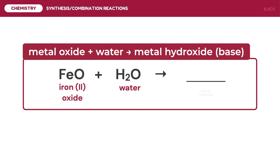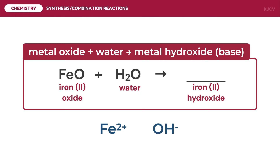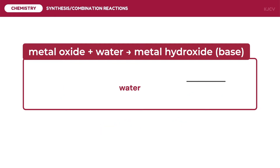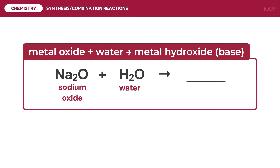For iron 2 oxide reacting with water: since iron forms an iron 2 cation with a charge of positive 2, and hydroxyl is OH with a charge of negative 1, doing a crisscross of charges gives Fe(OH)₂ or iron 2 hydroxide. The complete balanced reaction is 1 mole of iron 2 oxide reacting with 1 mole of water to produce 1 mole of iron 2 hydroxide.